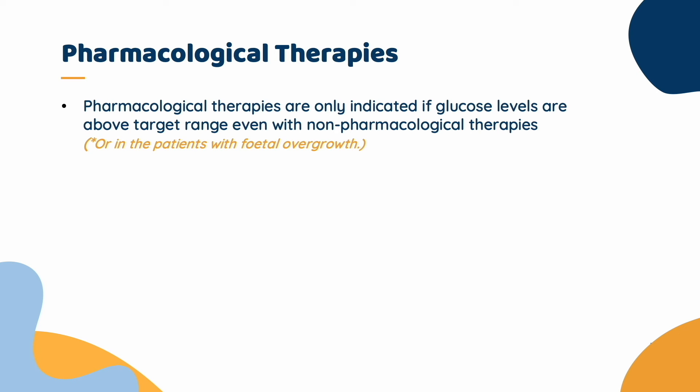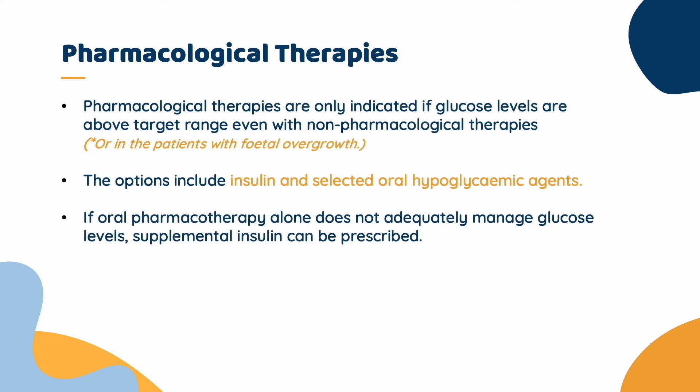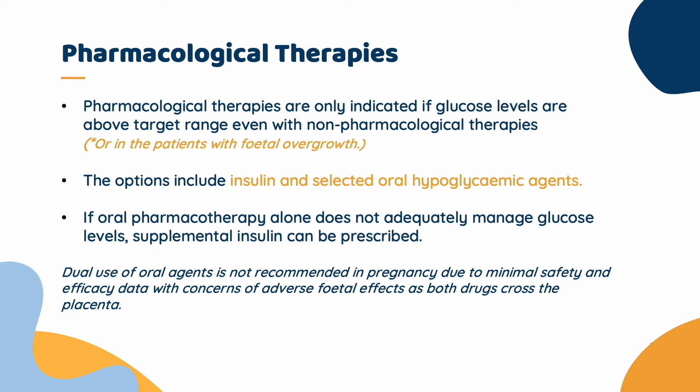Pharmacological therapies are only indicated if glucose levels are above target range even with non-pharmacological therapies, or in patients with fetal overgrowth. The options include insulin and selected oral hypoglycemic agents. However, only metformin and gliburide are safe for use in pregnancy. If oral pharmacotherapy alone does not adequately manage glucose levels, supplemental insulin can be prescribed.